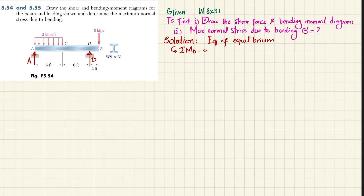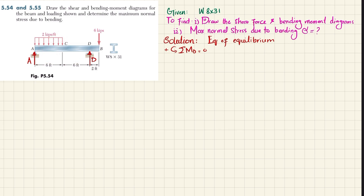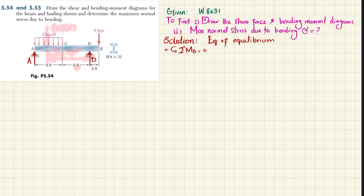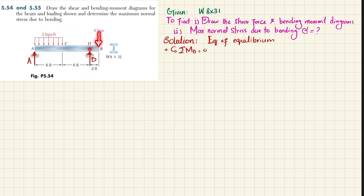The first equation of equilibrium: sum of all moments about point D equals zero, taking counterclockwise as positive. About point D, the moment due to A is over a total distance of 12 feet and is clockwise, so it is negative. The uniformly distributed load converts to a point load of 2×6, with perpendicular distance 3+6 = 9 feet, producing a counterclockwise moment (positive). The moment due to the 6-kip load at a perpendicular distance of 2 feet is clockwise (negative).